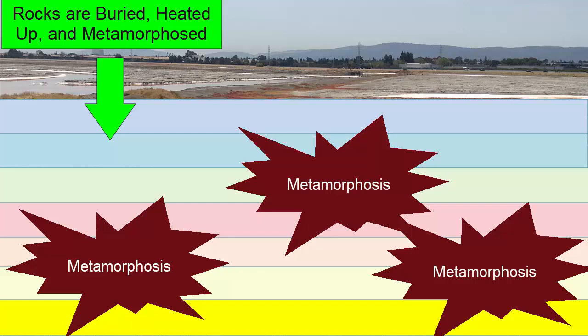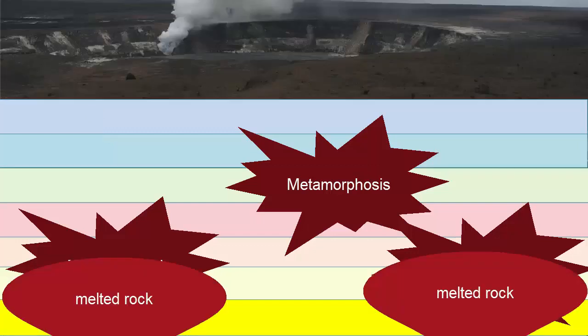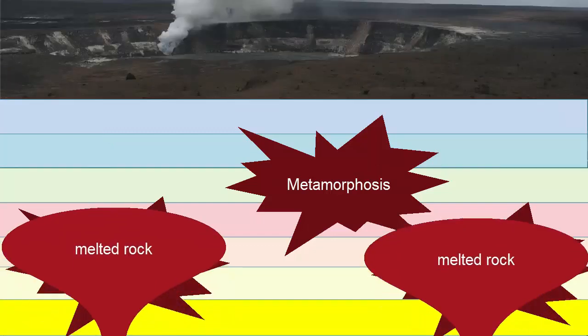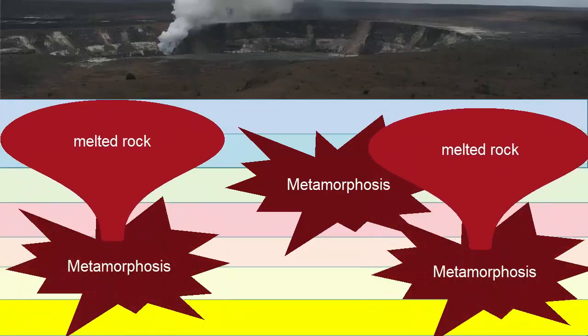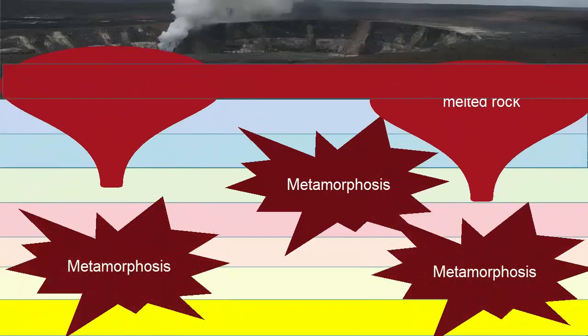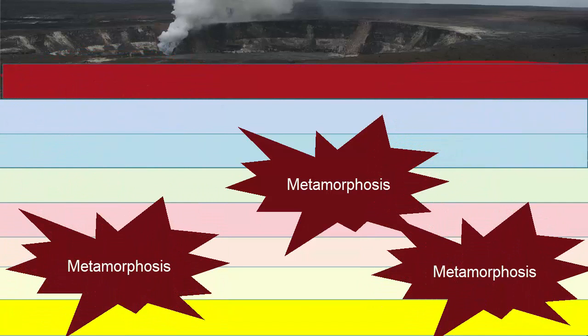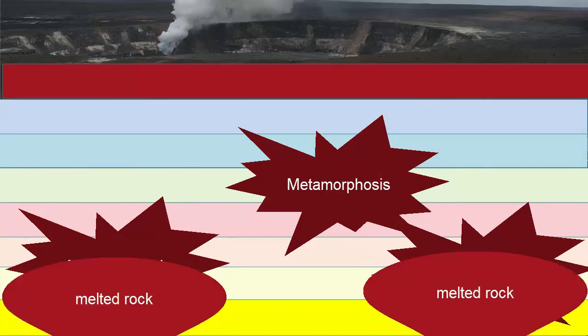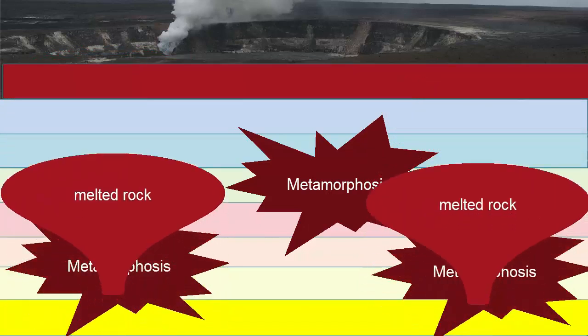If buried deep enough and heated up enough, the entire rock can melt to form a magma, which if erupted and cooled and solidified becomes an igneous rock. Now we are at the surface of an erupting volcano.